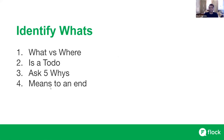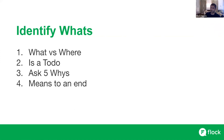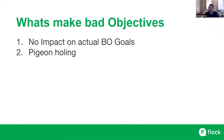If you start with an objective that says 'write more blog posts,' ask: why do I want to write more blog posts? If you get an answer that seems more like an objective, then you've found your objective. If not, ask again: why do I want to do that activity? Keep asking why until you get to something that seems like your team's objective or your company's objective.